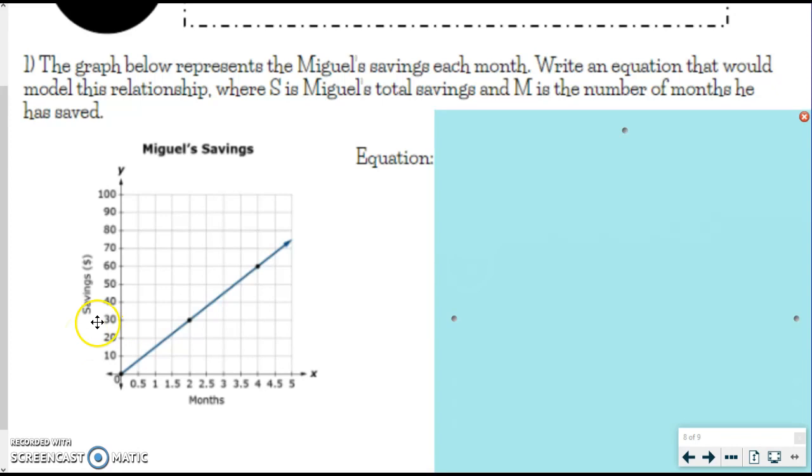So remember, to find your K, you can always take Y divided by X to get that. So if we do 30 divided by 2, we get 15, which makes sense. That's kind of what I was thinking based off of where 1 hit in the line. So for our equation, we simply put Y equals 15X. Very simple.